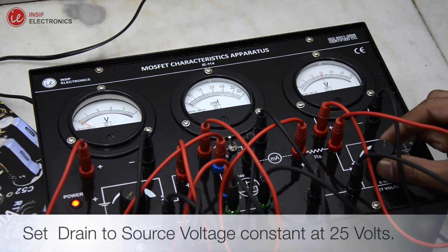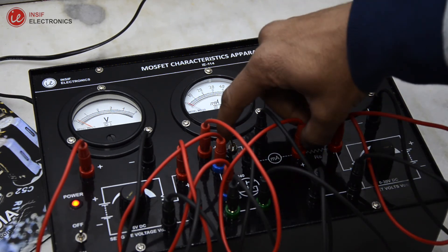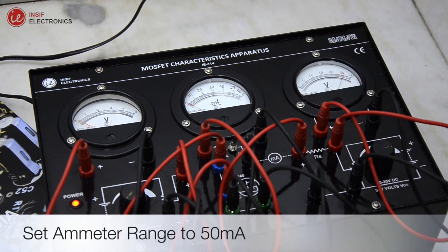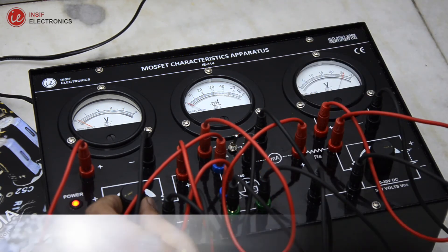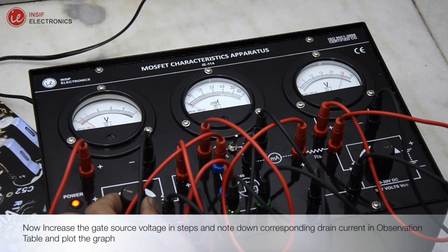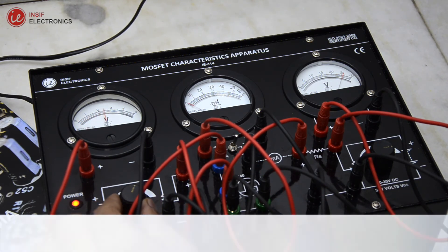Set drain to source voltage constant at 25 volts. Now increase the gate source voltage in steps and note down corresponding drain current in observation table and plot the graph.